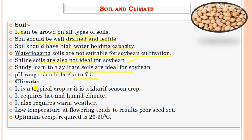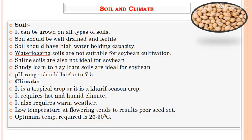Regarding climate, soybean is a kharif season crop requiring hot and humid conditions. It requires warm weather. Low temperatures at flowering tend to result in poor seed set. The optimum temperature required is 26 to 36 degrees Celsius.